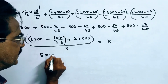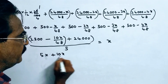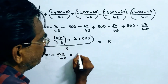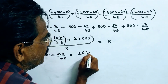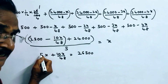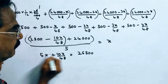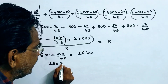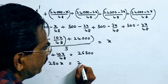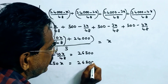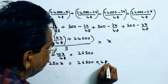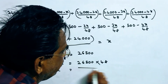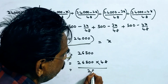So, 5X + 10X/48 = 24,000 + 2,500 = 26,500. Multiplying through by 48: 240X + 10X = 26,500 × 48, which gives 250X = 26,500 × 48. Therefore, X = (26,500 × 48) / 250.